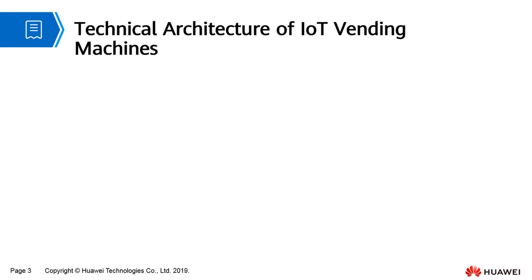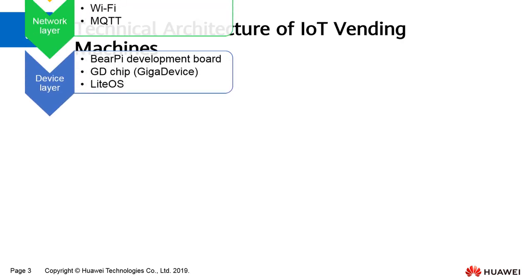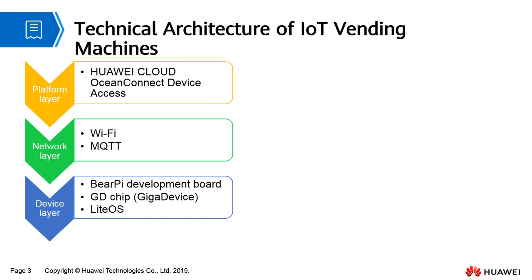The technical architecture of IoT vending machines consists of three layers: the platform layer, network layer, and device layer.